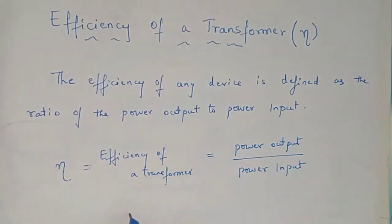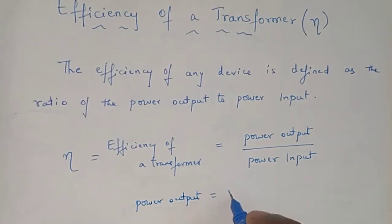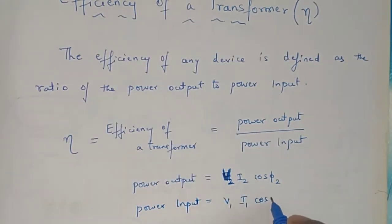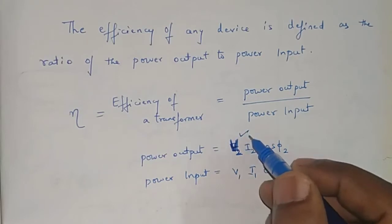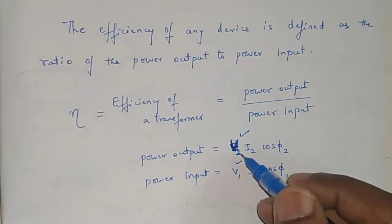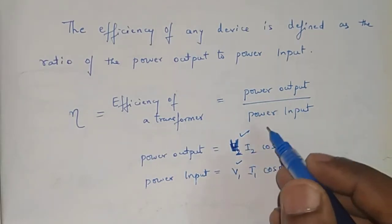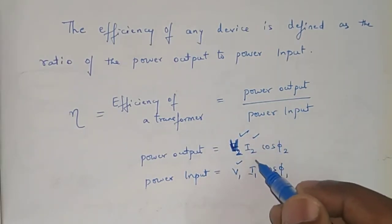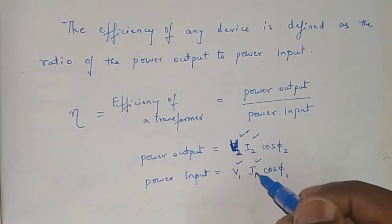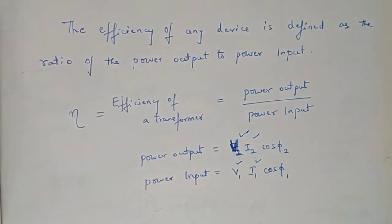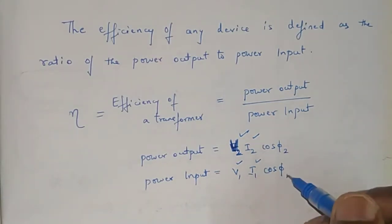I will write down what is output power. The formula for output power is given as V2·I2·cos φ2. Here V2 and V1 are the output and input voltages respectively, I2 and I1 are the currents flowing through the secondary and primary winding respectively, and cos φ are the power factors of the secondary and primary winding respectively.